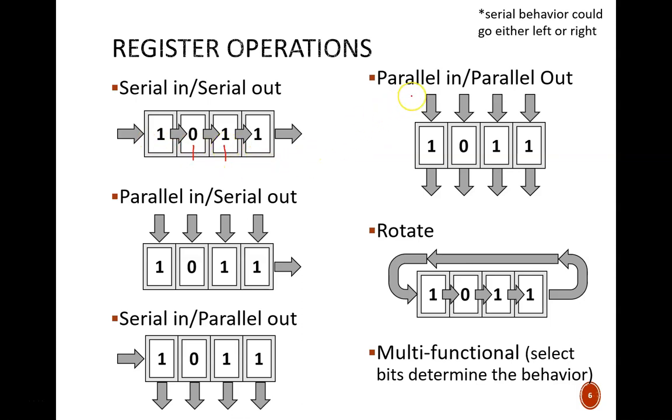For a parallel in, parallel out register, these cells do not communicate with each other. One data source passes in this one at the same time as a different data source passes in this zero.